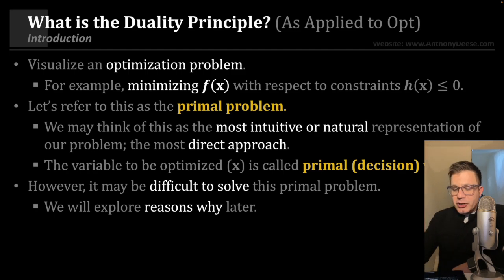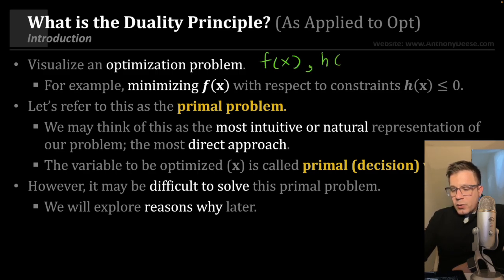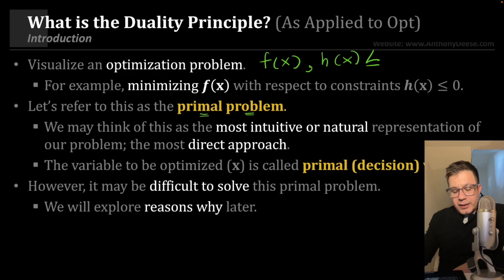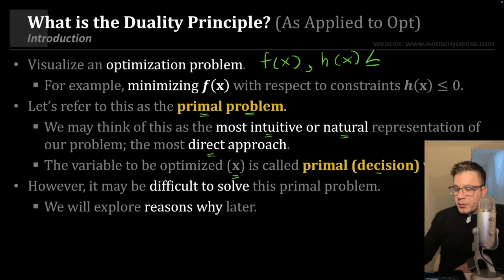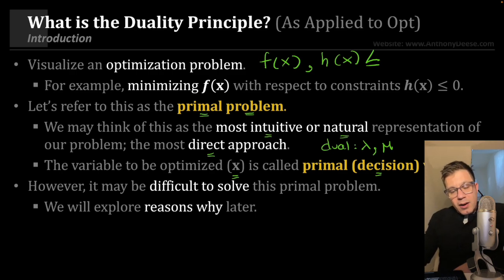Let's visualize an optimization problem. We're tasked with minimizing some objective function f of x with respect to some inequality constraints h of x that are less than or equal to zero. We're going to refer to this as our primal problem — pretty much the only type of problem we have been looking at so far. We may think of this as the most intuitive or natural representation of that problem, and it also facilitates the most direct approach to solving it. The variable to be optimized, x, is called the decision variable — the primal variable or primal decision variable — which contrasts with the dual variables, a term we're going to use for lambda and mu, which we were previously calling the Lagrange multipliers.